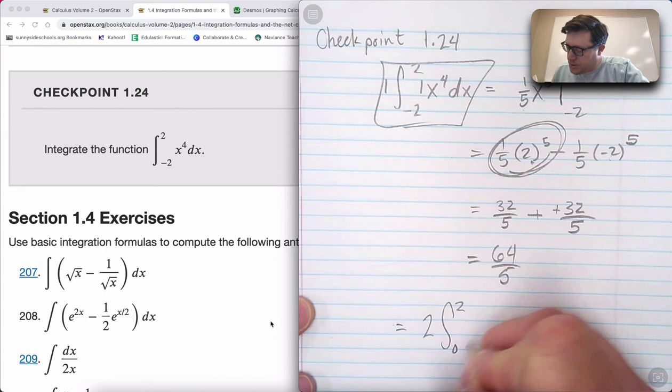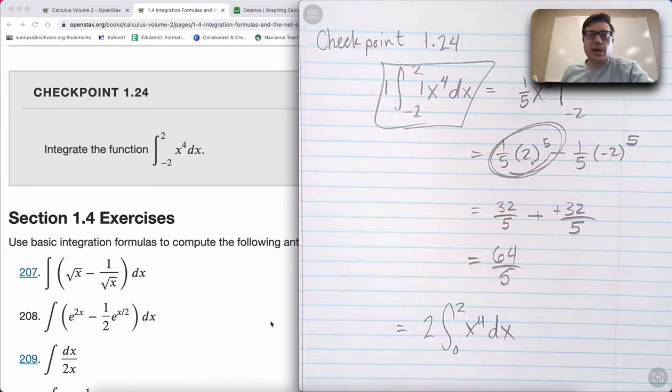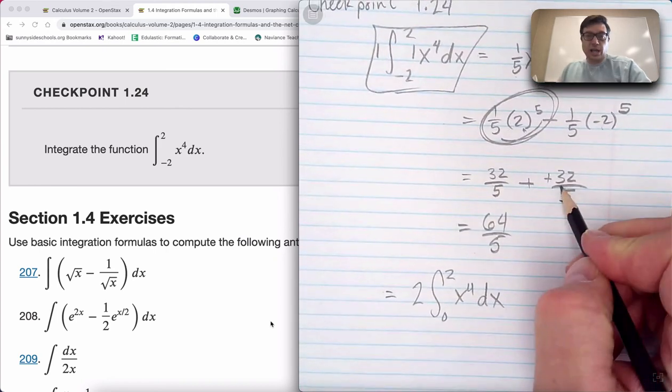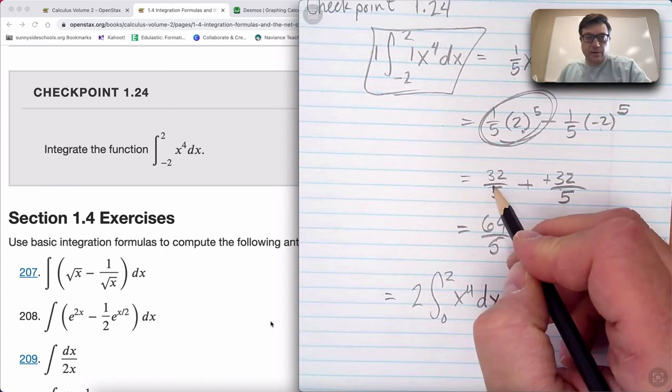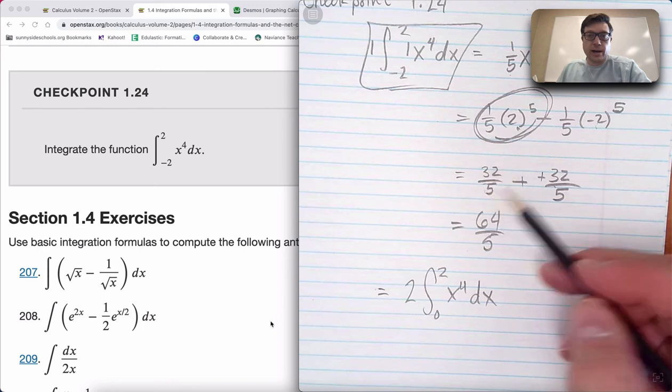This could be two times the integral from zero to two, which is going to double the right half of the graph, because if the left half of the graph matches the right half of the graph, then why not just calculate only the right half of the graph.